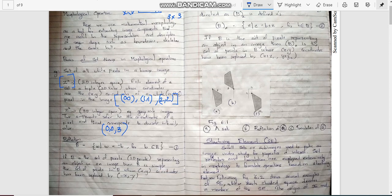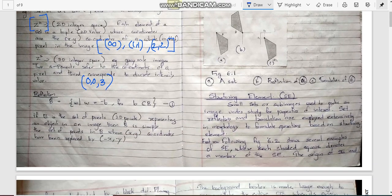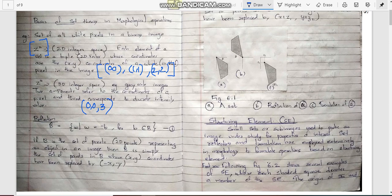Now, we need to learn what is a reflection and translation. You may be familiar with reflection in computer graphics. Here, we are representing reflection in terms of set theory. It is represented as B cap.